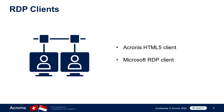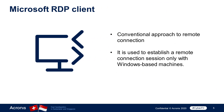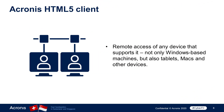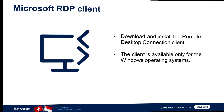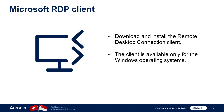There are two options to establish a remote connection to a customer's machine within Acronis Cyber Protect Cloud: via HTML5 client or via Microsoft RDP client. The Microsoft RDP client represents a conventional approach to remote connection and is used to establish a remote connection session only with Windows-based machines. In turn, the Acronis HTML5 client enables you to remotely access any device that supports it — not only Windows-based machines, but also tablets, Macs, and other devices.